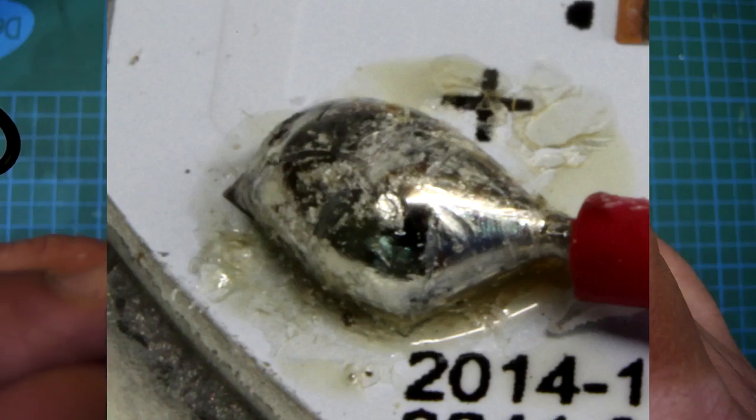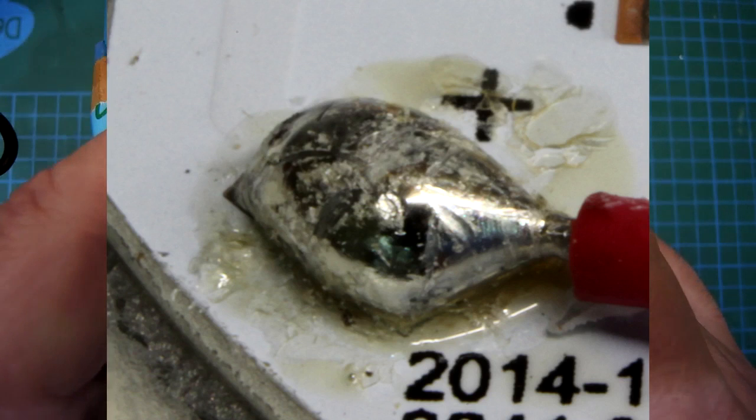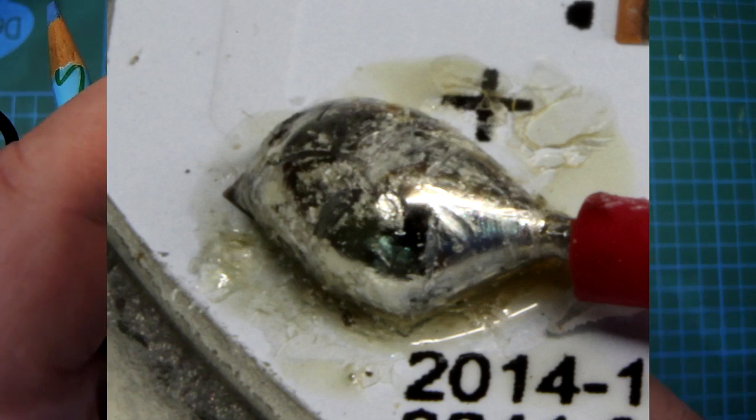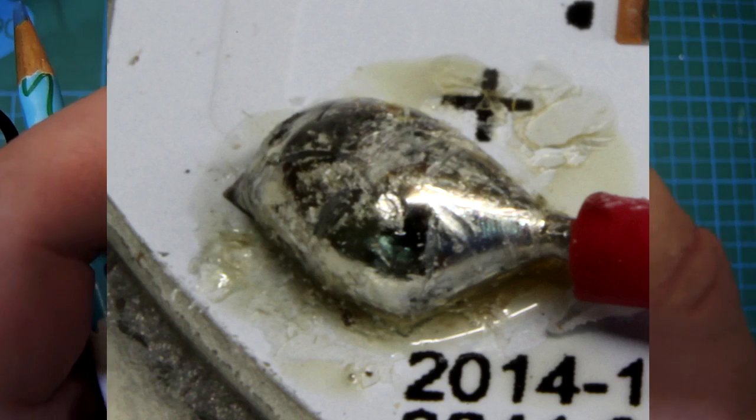Some interesting soldering - the solder for these leads are obviously soldered by hand. You can see the rosin residue is still present. That's always a weak point in an electronic assembly when you have somebody doing hand assembly.